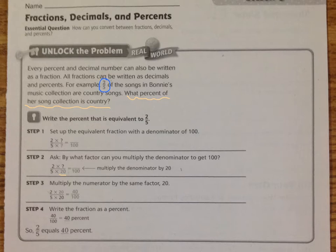So if we multiply the denominator by 20, we also have to multiply the numerator by 20. That's what makes it an equivalent fraction. So 2 times 20 equals 40. And so now it's 40 out of 100. That's the hard work. It's done.